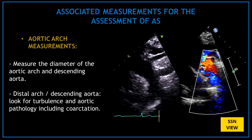Second, we have the aortic arch measurements. From the suprasternal notch view, measure the diameter of the aortic arch and descending aorta. Visually assess the arch and the descending aorta and look for turbulence and aortic pathology, including coarctation.